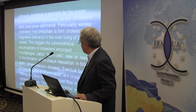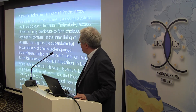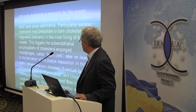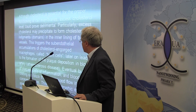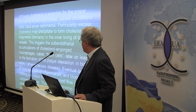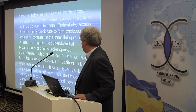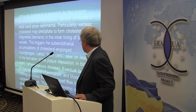Inside blood arteries, cholesterol lodgments or domains can develop. Macrophages come in and try to somehow consume this domain, but they cannot get rid of it, so they become bigger and bigger. This stage is called a foam cell. The next stage in the development of arteriosclerosis is when calcium arrives, leading to the development of something more stiff — this is the plaque.